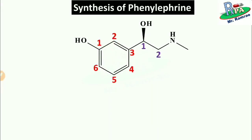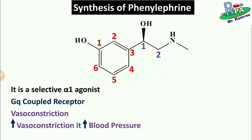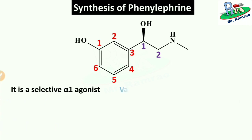Phenylephrine is a selective alpha-1 adrenergic agonist. The alpha-1 adrenergic receptors are GQ-coupled receptors which are mainly found on the vascular smooth muscles — that is, smooth muscles of various blood vessels. When an agonist binds with the alpha-1 receptor, it leads to vasoconstriction, which increases blood pressure. Agents or agonists that increase pressure on blood vessels are also known as vasopressor agents.